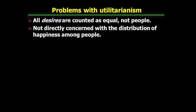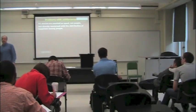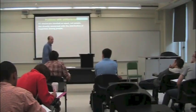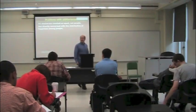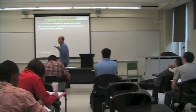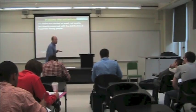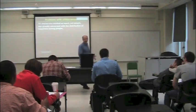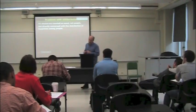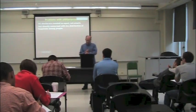So you might think that what utilitarianism requires is an equal distribution of happiness among all individuals. But that's not right, or that's not necessarily right. Utilitarianism is not directly concerned with who has how much happiness. It's only concerned with maximizing the total amount. So if the way to maximize the total amount is to distribute it equally, fine. If the way to maximize the total amount is to distribute it unequally, it should be distributed unequally.